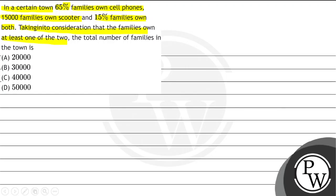Every family has a scooter or a cell phone — at least one. There is no family without a scooter and a cell phone; at least one of them is there. The total number of families in the town is what we need to find.